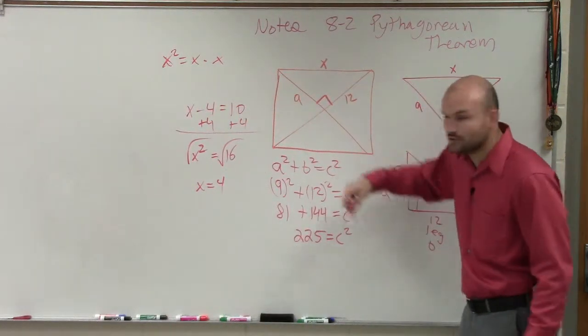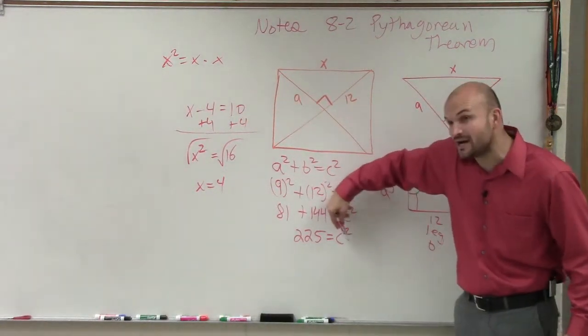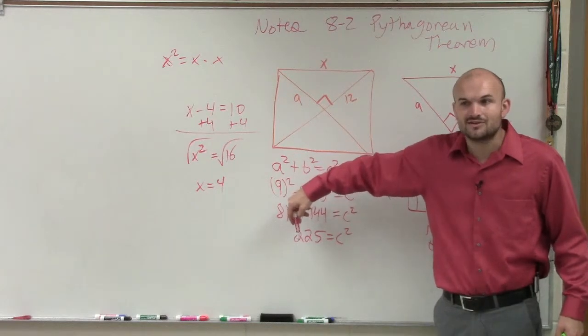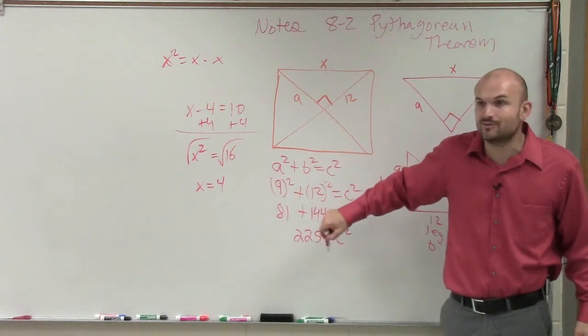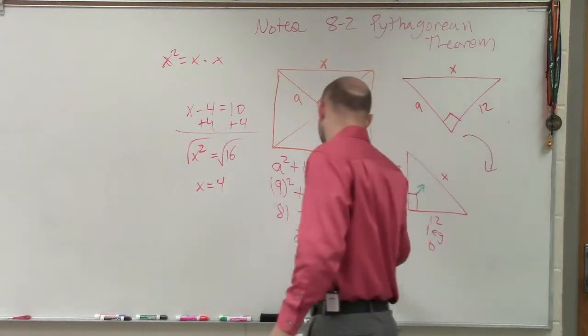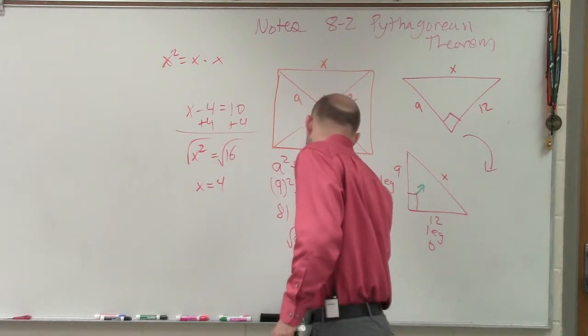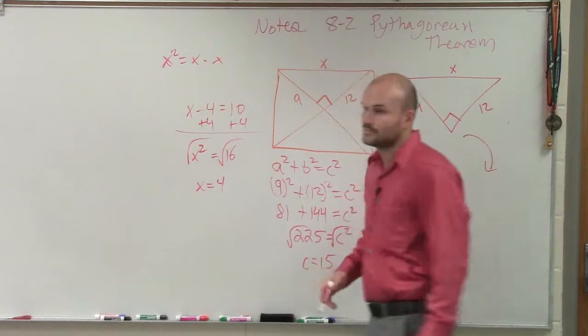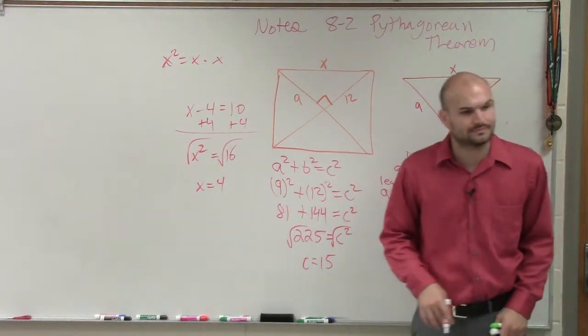So ladies and gentlemen, you look at this. I have c squared equals 225. So therefore, to solve for c, I have to take the square root of both sides. So c is going to equal 15.